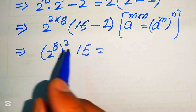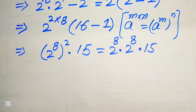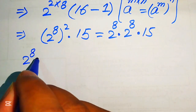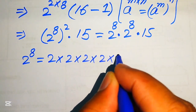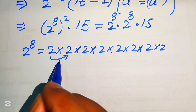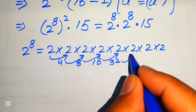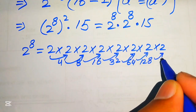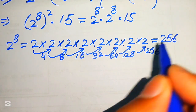Now we need to find 2 to the power of 8, meaning 2 multiplied by itself 8 times. So: 2 times 2 is 4, times 2 is 8, times 2 is 16, times 2 is 32, times 2 is 64, times 2 is 128, times 2 is 256. Therefore 2 to the power of 8 equals 256.